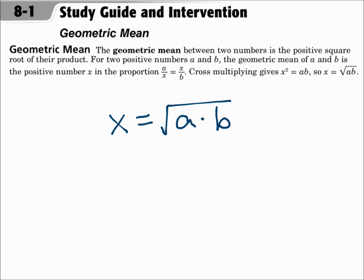The geometric mean between two numbers is the positive square root of their product. In other words, multiply the numbers and take the square root, and that's the geometric mean. You can use the formula x equals the square root of a times b. a and b are the two numbers that you're taking the geometric mean of, and x will be the geometric mean.